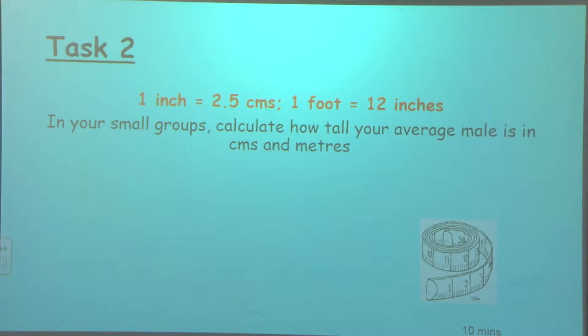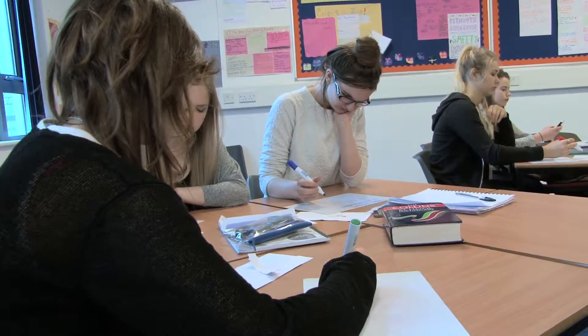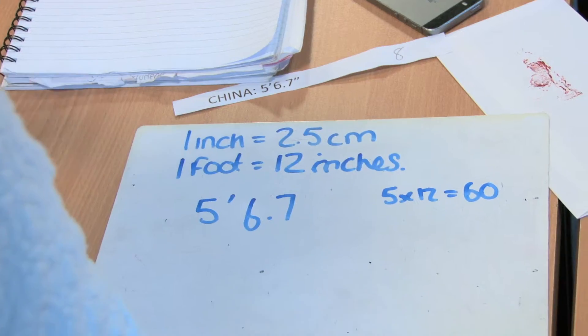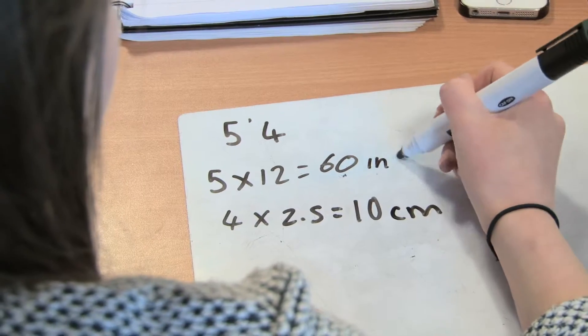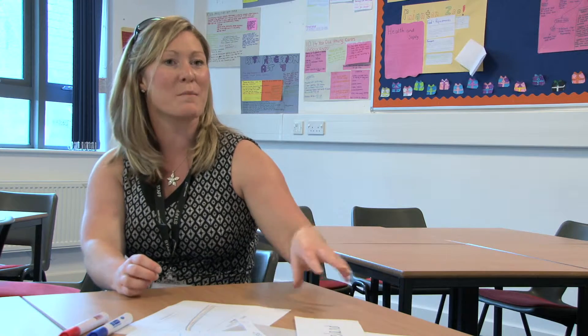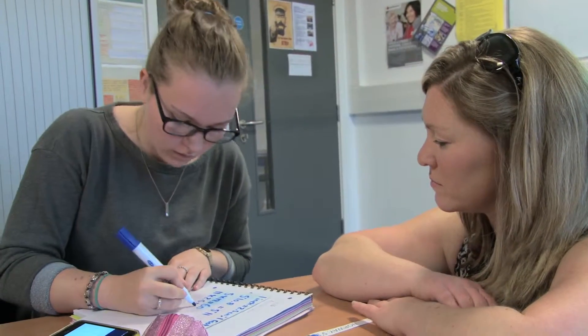For the next activity, the learners now have to convert their heights from imperial to metric units. We were looking at the difference between imperial and metric because of the different service users they would be coming across — the older generation perhaps still working in imperial, where the newer generation and those coming from overseas or from Europe prefer working in metric.